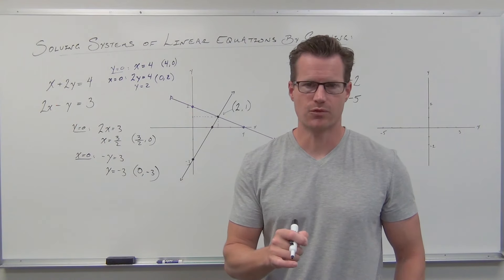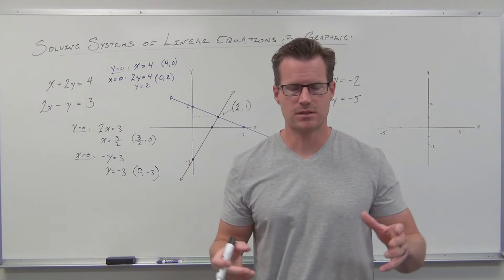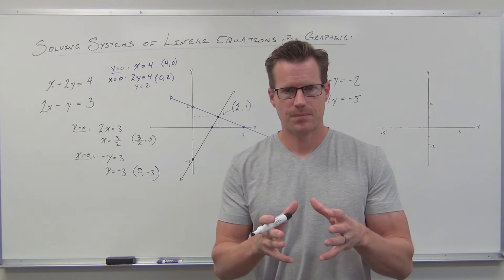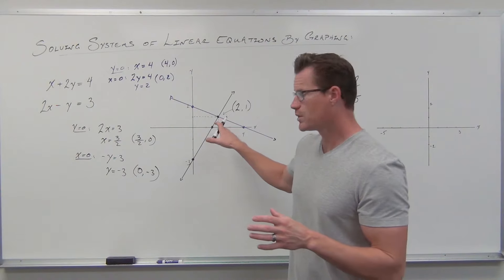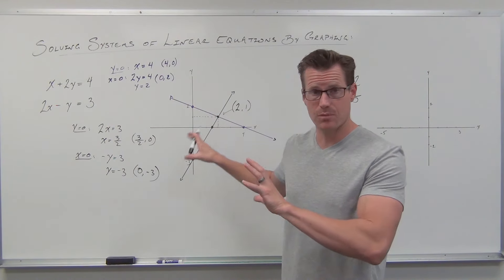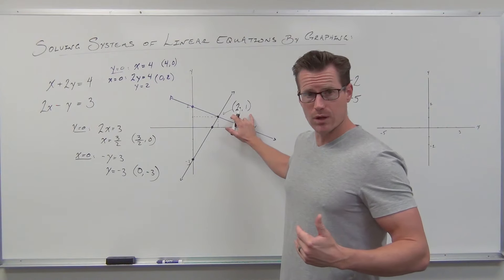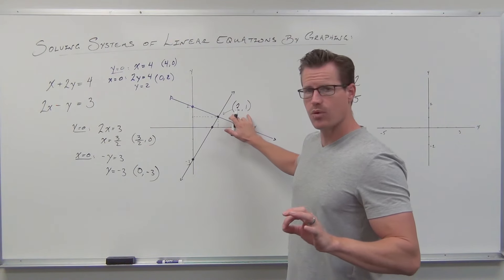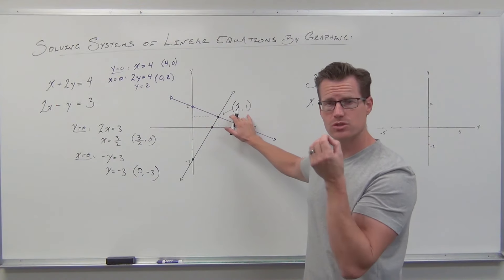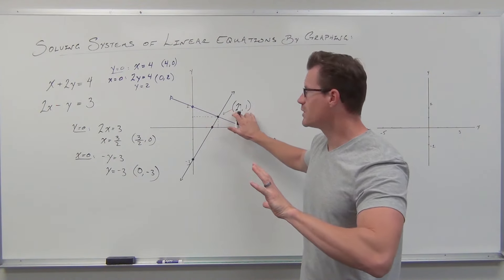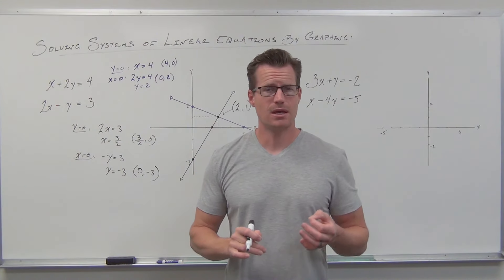Now I want you to stop and listen carefully. Some people are not very good at making accurate graphs. But that's okay — what I want you to understand is that no matter what you get here, whatever you find as the intersection, you are not done. The better you are at graphing, the more accurate this is going to be. But whatever you get, take that point — your x-coordinate and y-coordinate — get that in your head. Your x-value is two, your y-value is one. If you plug that into both equations, it has to make a true statement in both of them. If it doesn't, you have the wrong point.